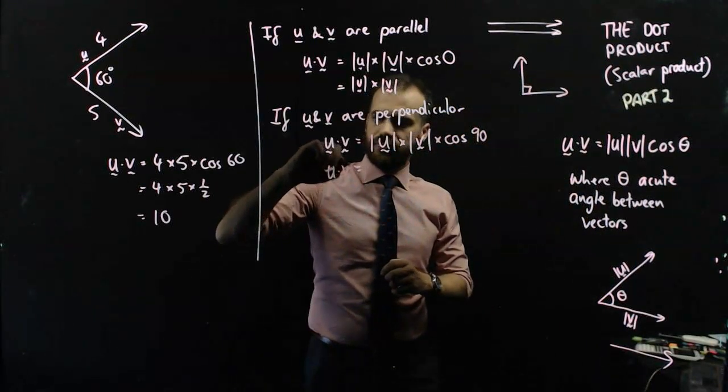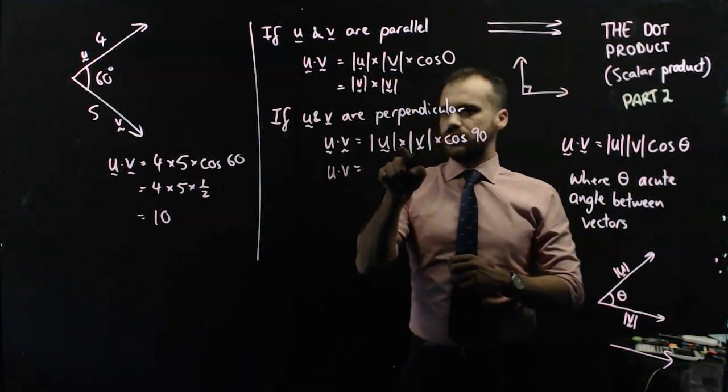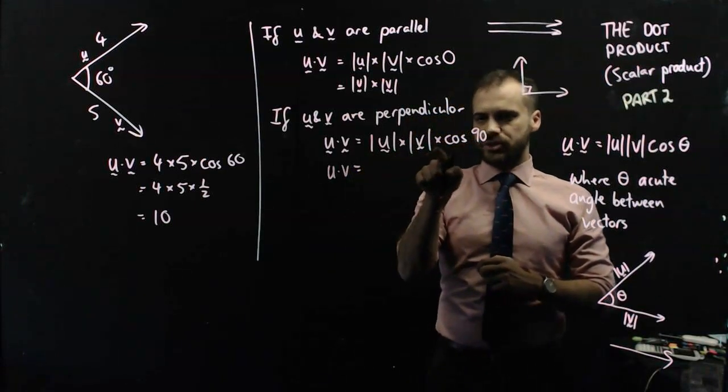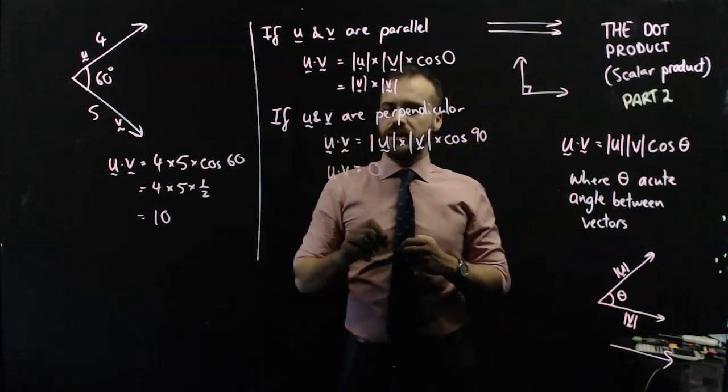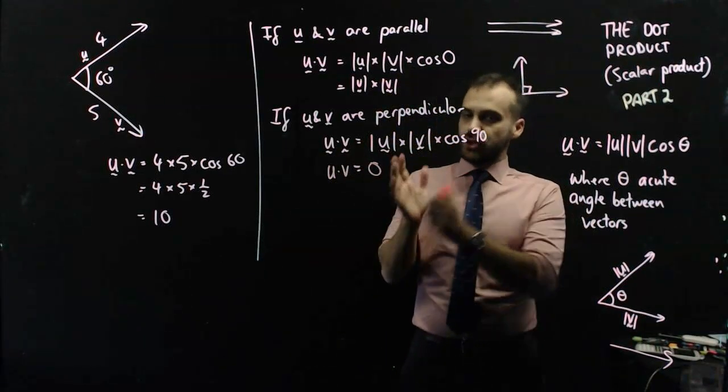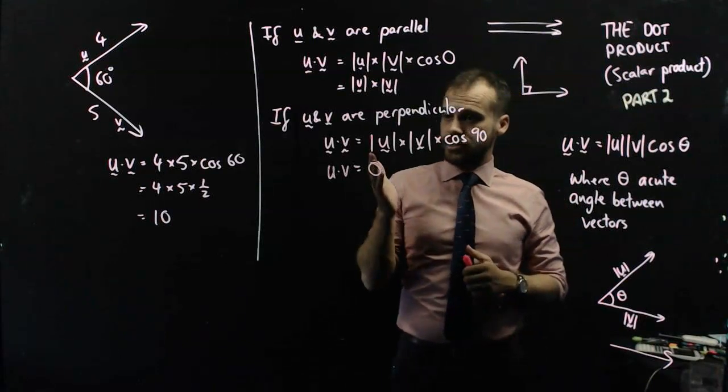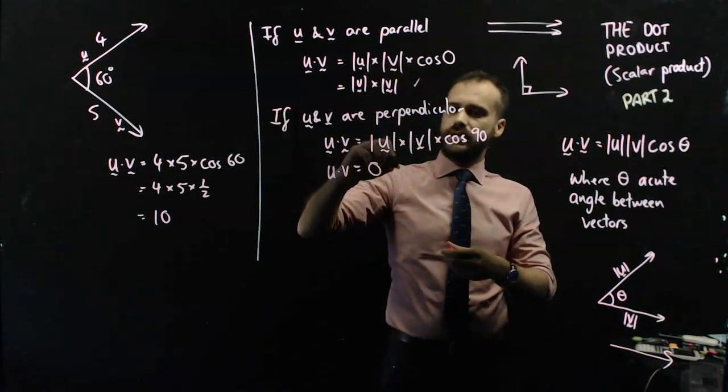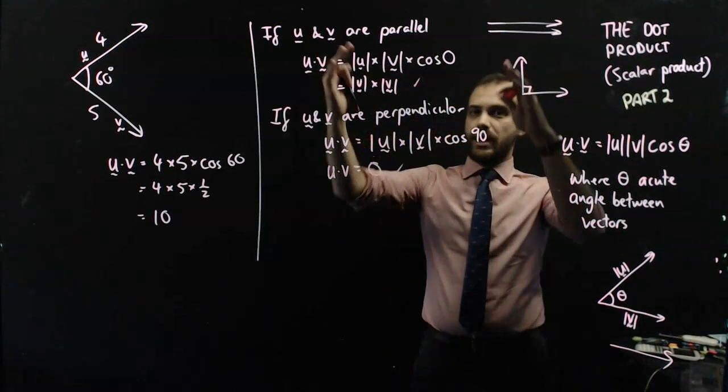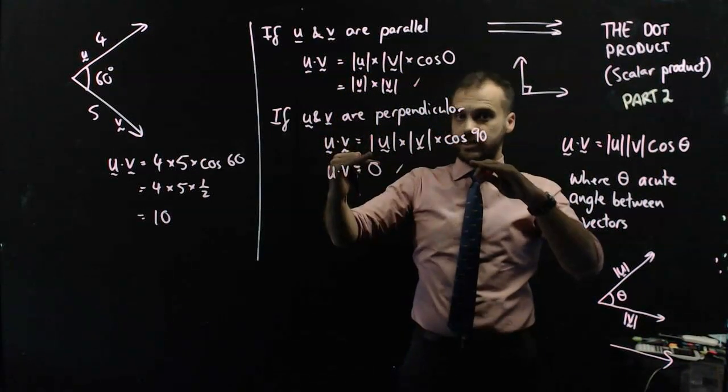So u dot v equals u times v magnitude times magnitude times zero. Anything times zero is zero. So the dot product of perpendicular vectors is zero.